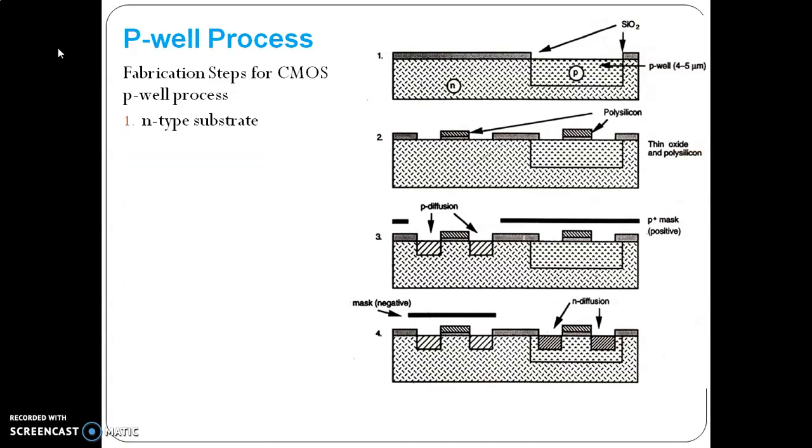Take an N-type substrate, and onto that substrate define the area where you are going to form the well. Put a thick oxide and etch away the area where the well has to be created, and keep the oxide with the photo resist material on the remaining area.